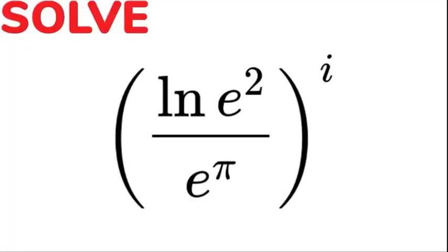Hello and welcome back to Maths Plus. Today we have a complex number problem: ln of e squared over e to the power of π, all to the power of i. Maybe give it a try and let me know how you get on.